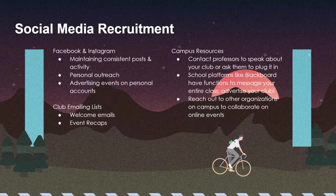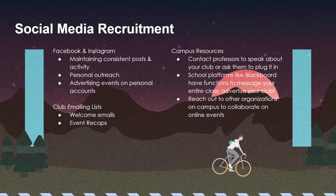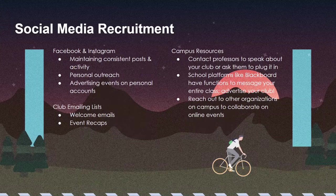You can also have club emailing lists. A lot of clubs have emailing lists where they do event recaps and talk about what's coming up. Aside from that, you can do welcome emails — sending emails to your new members saying hello, thank you for joining, here are some resources, here's a general rundown on what we do. You can also send emails to members who have been inactive for a while. That way they know that you care and that you miss them. In terms of campus resources, you can contact professors to speak about your club or ask them to plug it at the end of a lecture. Canvas and Blackboard also let you make announcements — but please ask permission before advertising in a class.